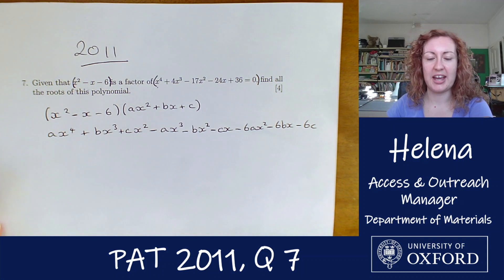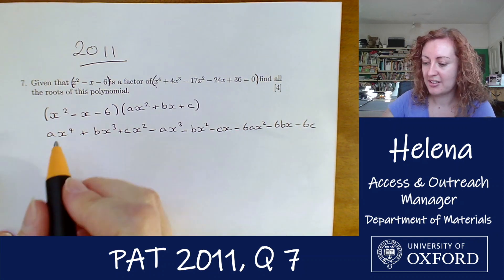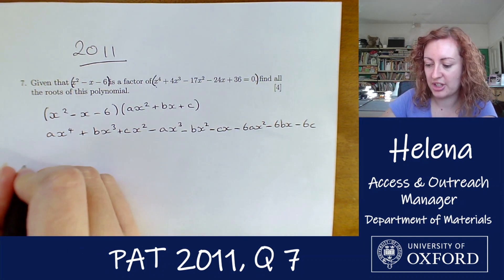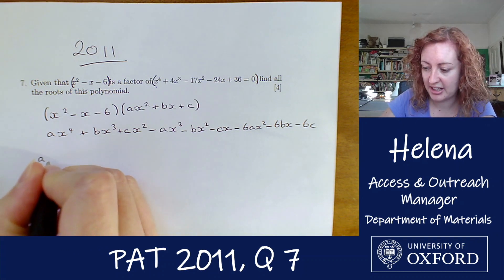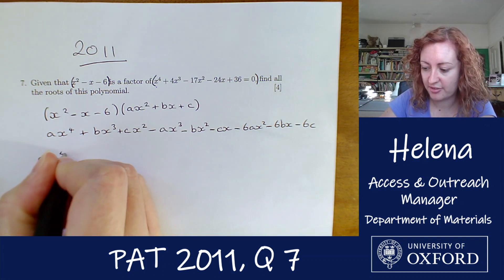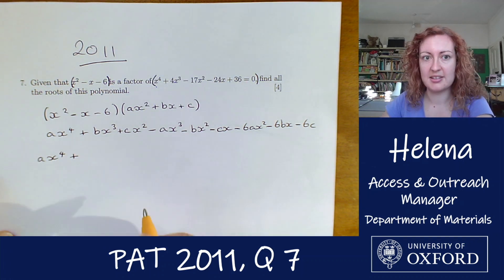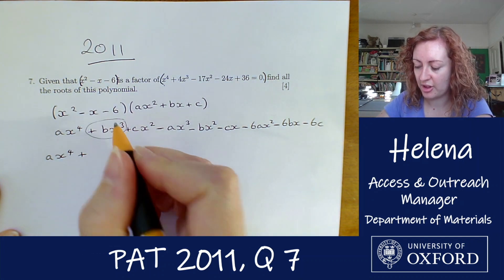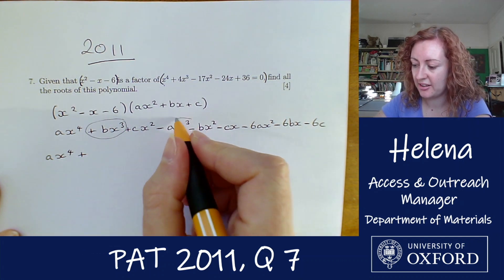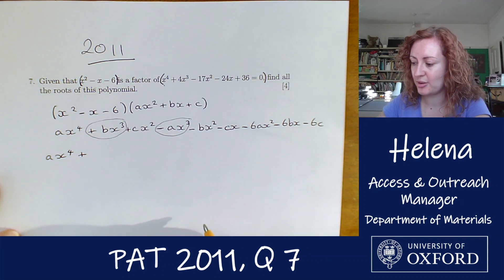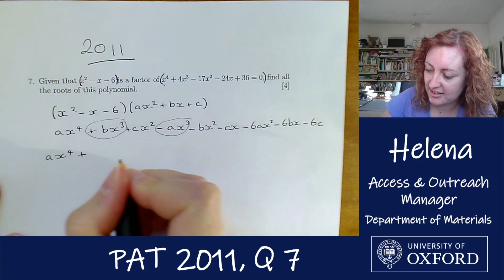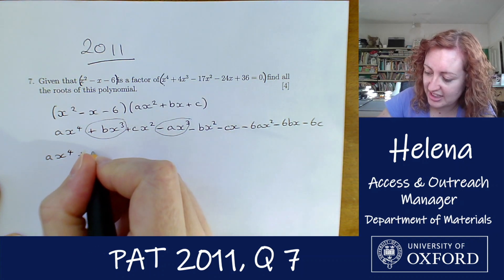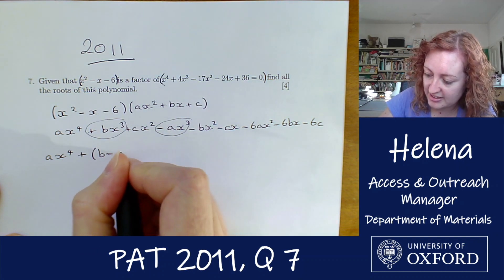Now let's group all the terms together. We have a single x to the four term: ax to the four. Looking at the x cubed terms, we have plus bx cubed and minus ax cubed, which group together to give (b minus a)x cubed.